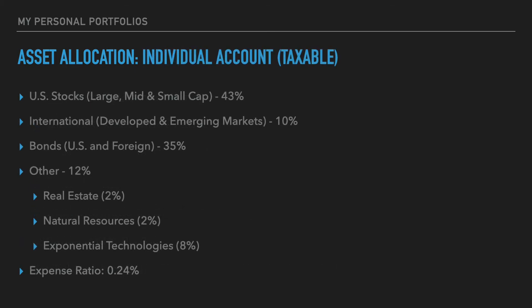In my individual investment account, which is taxable, I have an asset allocation as follows: U.S. stocks 43%, which does include large cap, mid cap, and small cap stocks. I have a 10% allocation to international stocks, which includes developed and emerging markets, 35% exposure to bonds, which includes both U.S. and foreign bonds, and 12% other, which breaks down as real estate 2%, natural resources 2%, and exponential technologies 8%. The expense ratio of this portfolio is only 24 basis points.